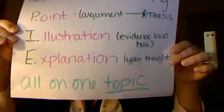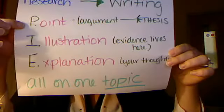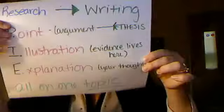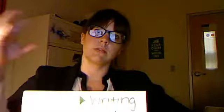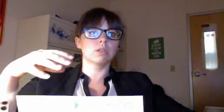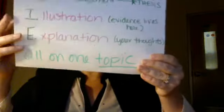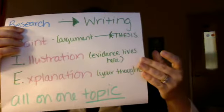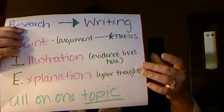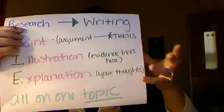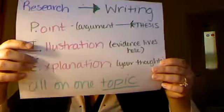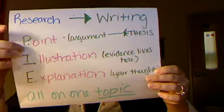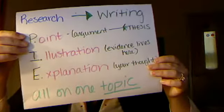Pi paragraphs have three essential pieces of information. The first is a point — that's a topic sentence. This is a drawing of a hand reaching back to grab at the thesis, because whenever you have a topic sentence, it should always relate back to your thesis and support it. The next is an illustration — this is where your evidence lives, where the stuff from your research goes, properly cited with parenthetical citation. And then the explanation — this is your thoughts, where you explain how the evidence is proving your point. Each paragraph should be focused on one topic with these three things.